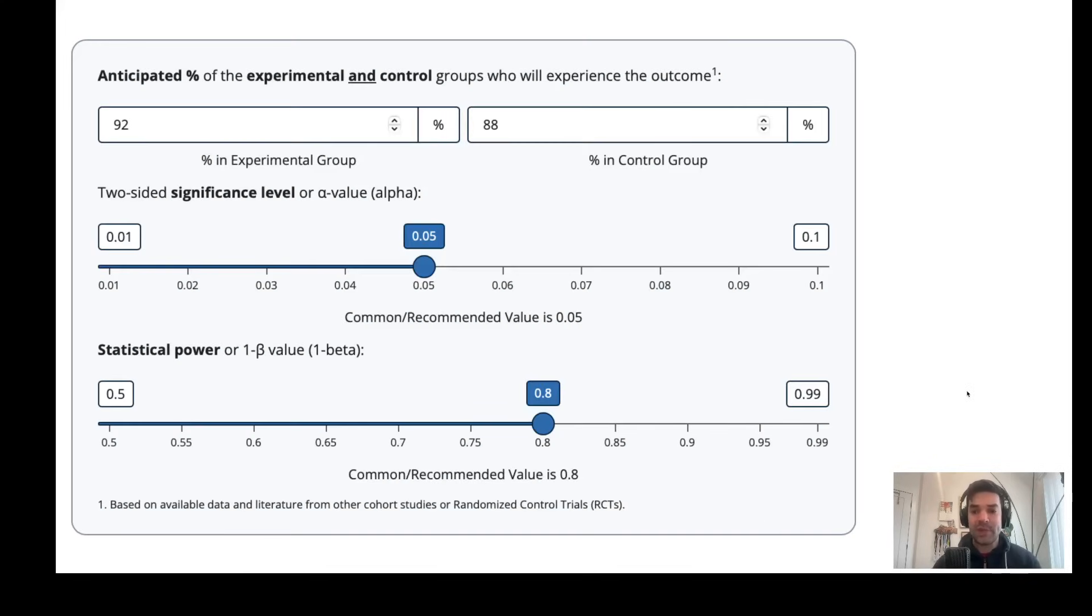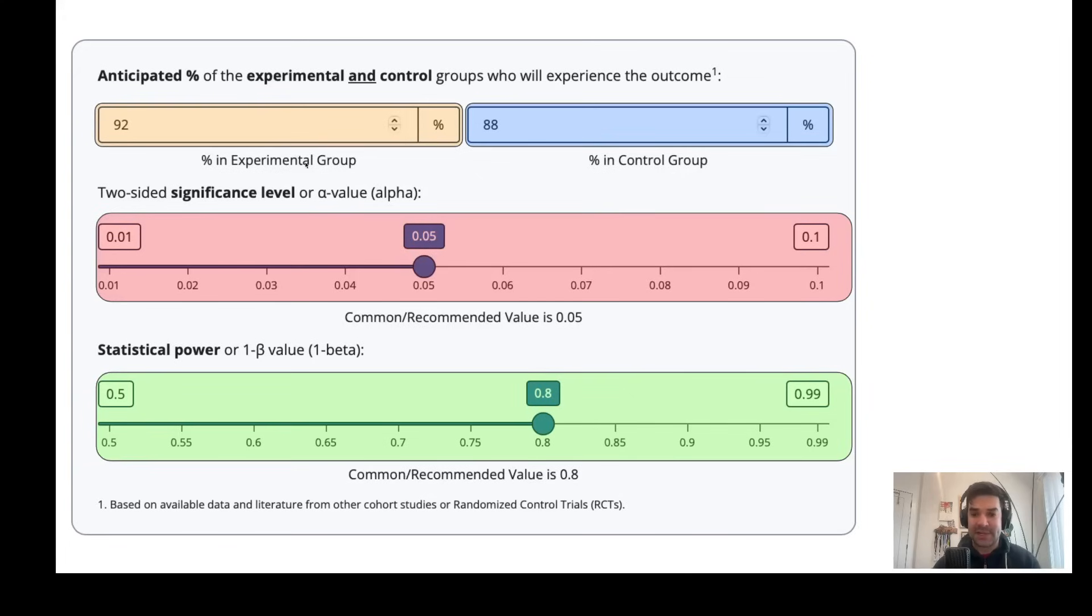So we put in the numbers. Our 92% is what we would have gotten from the literature for our estimate of the cure rate in the experimental group. 88% is the estimate based on prior studies in the control group.